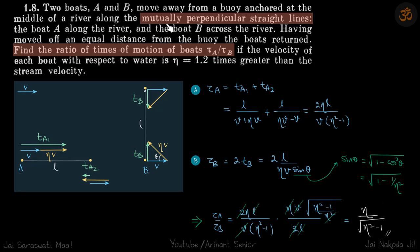Two boats, A and B, move away from a buoy anchored at the middle of a river. The boats are moving in mutually perpendicular straight lines and they go and come back on the path. We need to find the ratio of their time of motions. So boat A goes along with the flow of water and travels a distance L and comes back. Boat B travels perpendicular to it and comes back again. So we need to find the ratio of the time taken by each of the boats for the round trips.